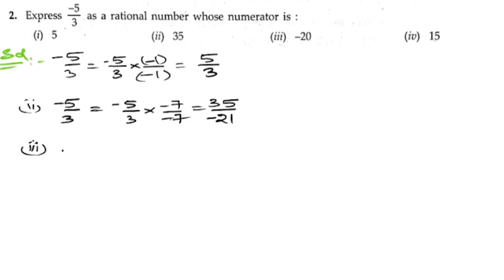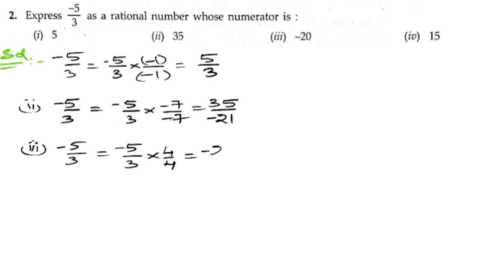The third part: to get minus twenty, we already have minus, so we need to multiply only with four. Multiply by four by four: five fours are twenty, and three fours are twelve, giving minus twenty by twelve.